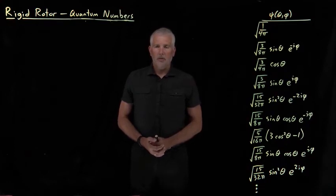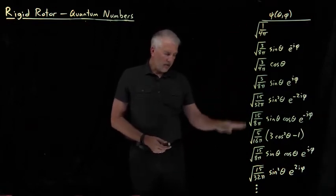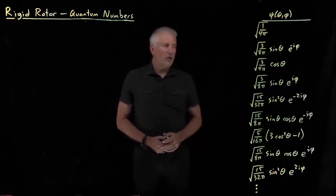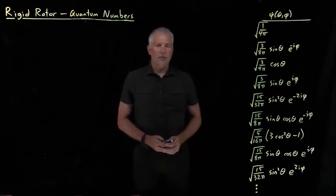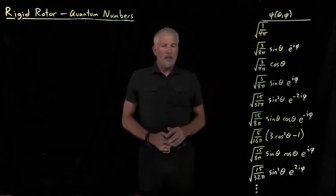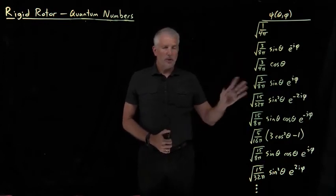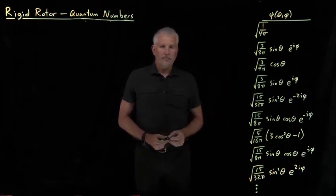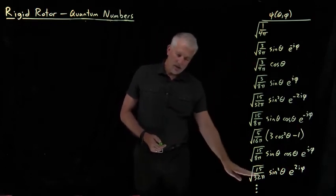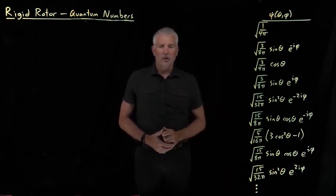Let's take a look at our rigid rotor wave functions in more detail. We've got a collection of wave functions — I've written more of them here than before. I've included the normalization constants, so every one of these different wave functions has its own individual normalization constant. You can find these normalization constants by normalizing the wave function. There are many of these wave functions; the list continues on forever — there's an infinite number of solutions that solve the rigid rotor Schrödinger equation.